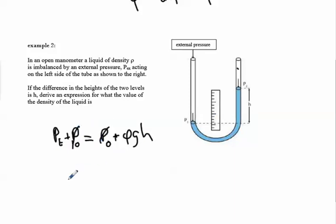So we see that the atmospheric pressure cancels out, and then the density of that liquid is equal to the external pressure divided by G times H, which makes sense. If we increase the external pressure, the H would have to go up, like we'd expect, to keep the density constant.